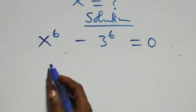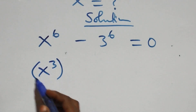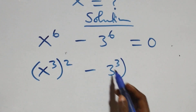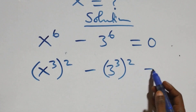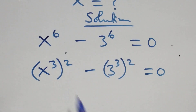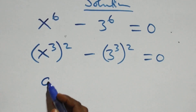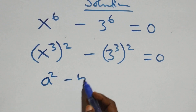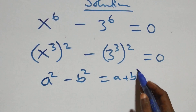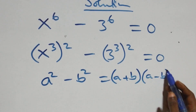The next step: we can write this as x raised to power 3, then raised to power 2, minus 3 raised to power 3, then raised to power 2, equals 0. This follows the difference of two squares — when we have a squared minus b squared, this becomes a plus b in brackets times a minus b in brackets.